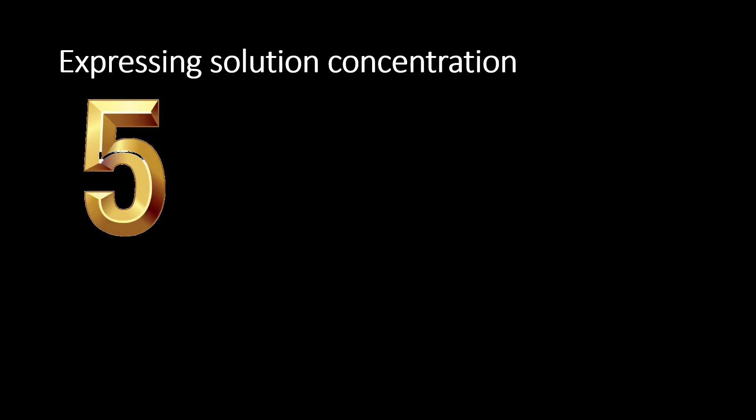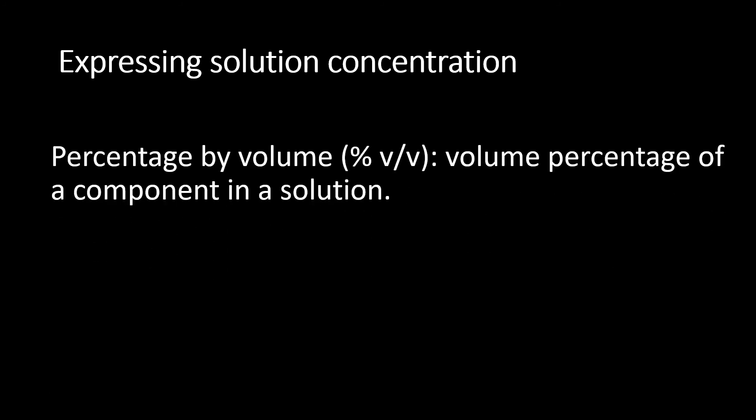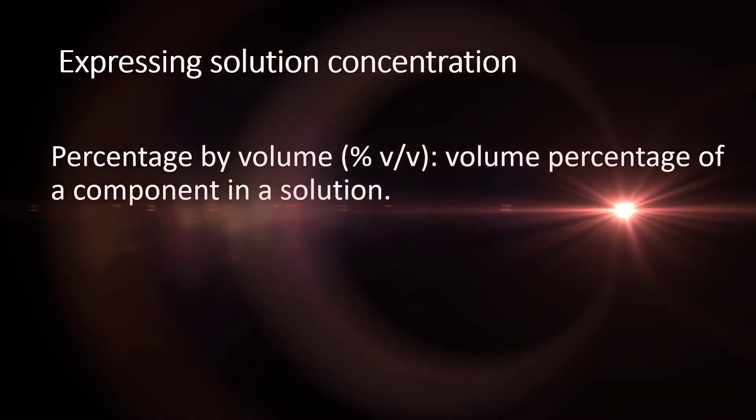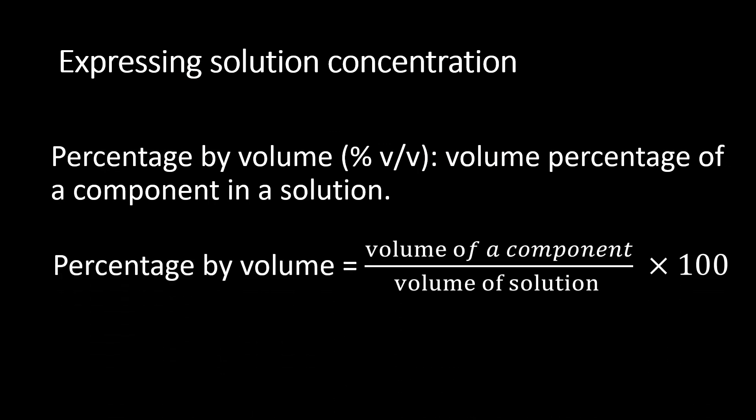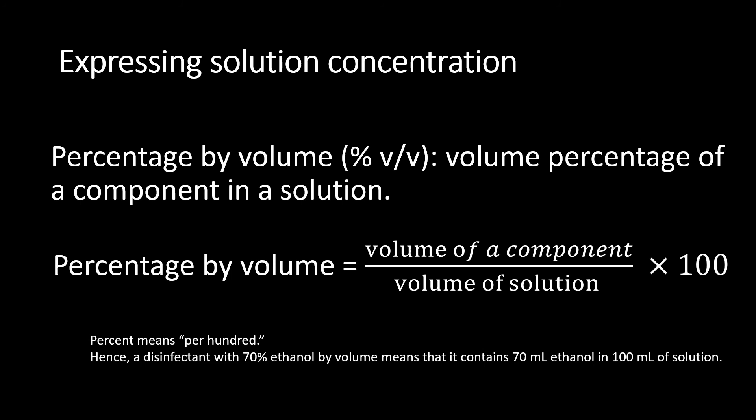The fifth way to express solution concentration is percentage by volume. Percentage by volume is defined as the volume percentage of a component in a solution. The formula is: percentage by volume equals the volume of a component over the volume of the solution, multiplied by 100. For example, if given a disinfectant with 70% ethanol by volume, it means that in 100 mL of solution, 70 mL is the solute ethanol.